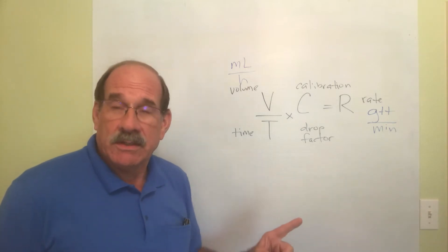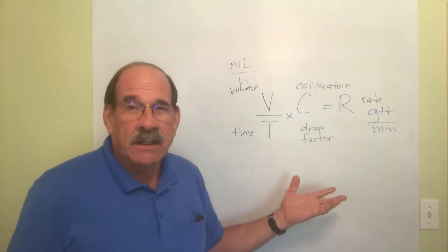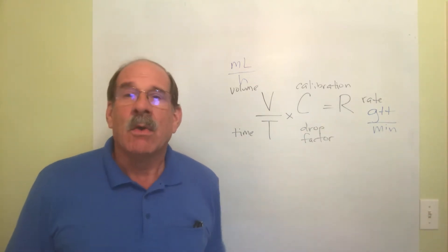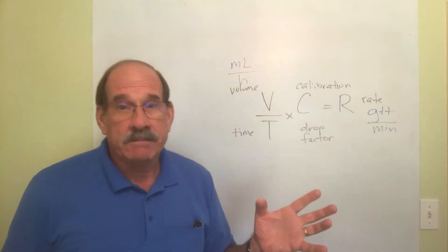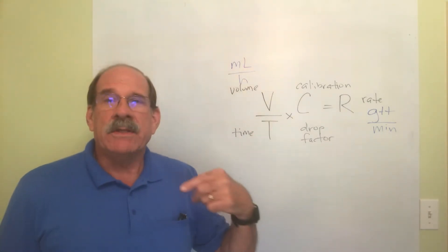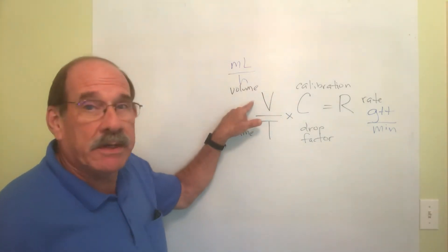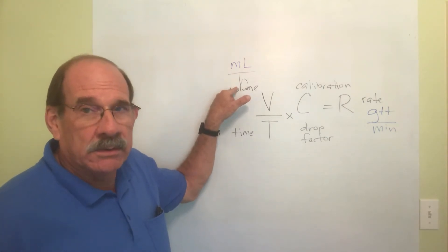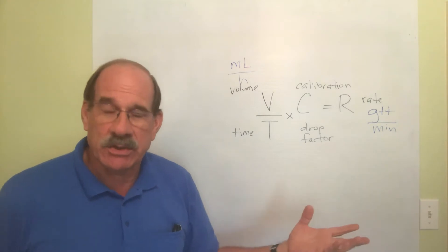V should be a fairly simple number to find because number one, you already know how to do it from the previous quiz. Sometimes you're just told, like give this patient 125 milliliters per hour. Sometimes you have to calculate it yourself, but it's very simple.